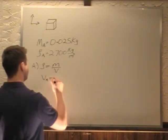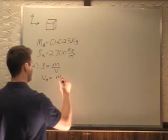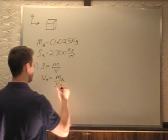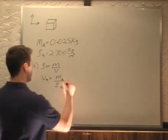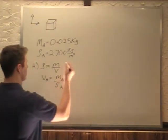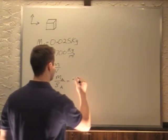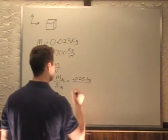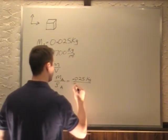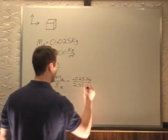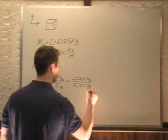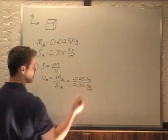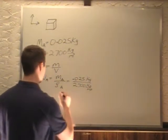Volume of aluminum equals mass of aluminum divided by density of aluminum. I'm plugging my values: mass is 0.025 kilograms, density is 2,700 kilograms per cubic meter. These kilograms cancel, we get meters cubed on top.